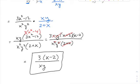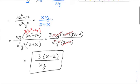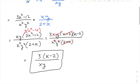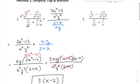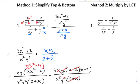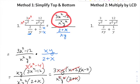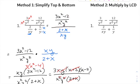So that was Method 1: make common denominators to combine the numerator into a single fraction, do the same with the denominator, then multiply the top by the reciprocal of the bottom. Feel free to distribute the 3 if you like, but leaving it in factored form lets you confirm there are no more common factors.